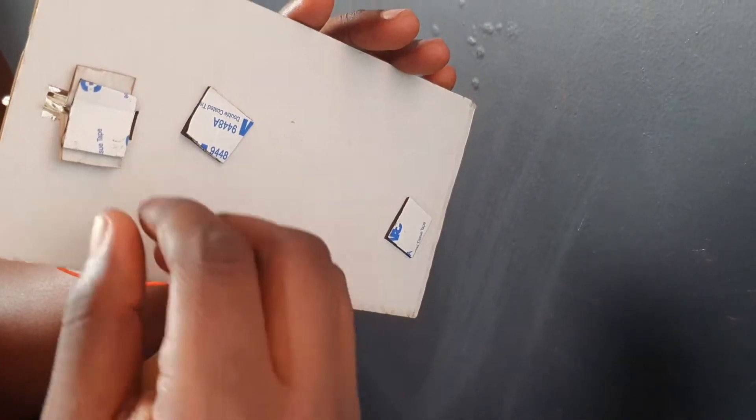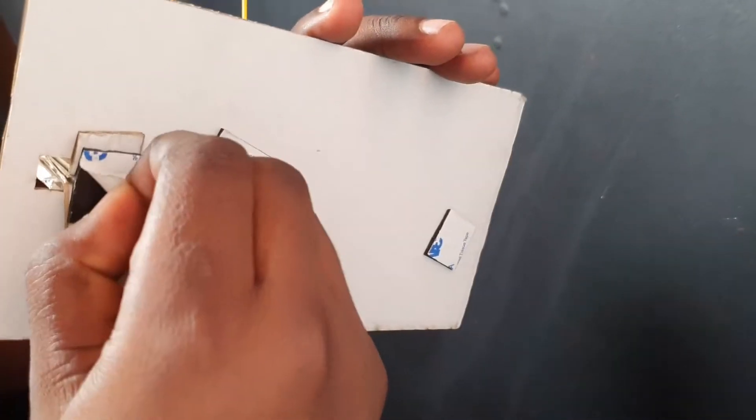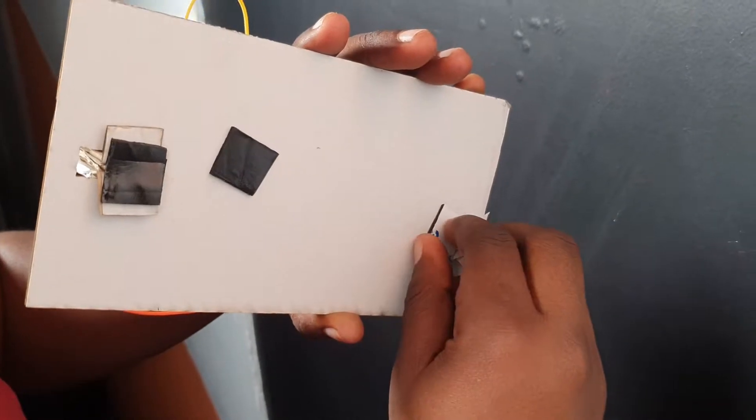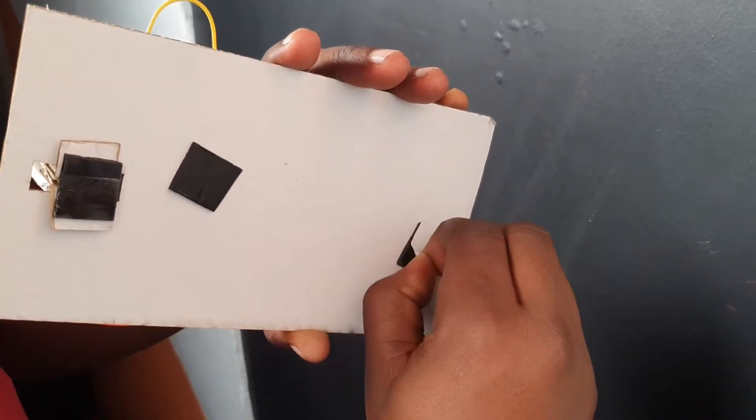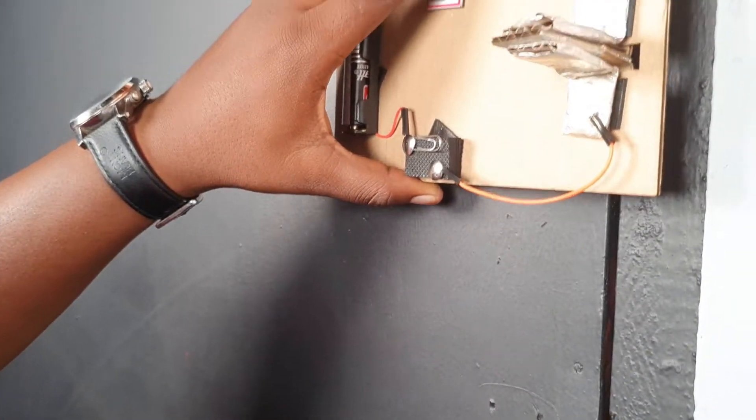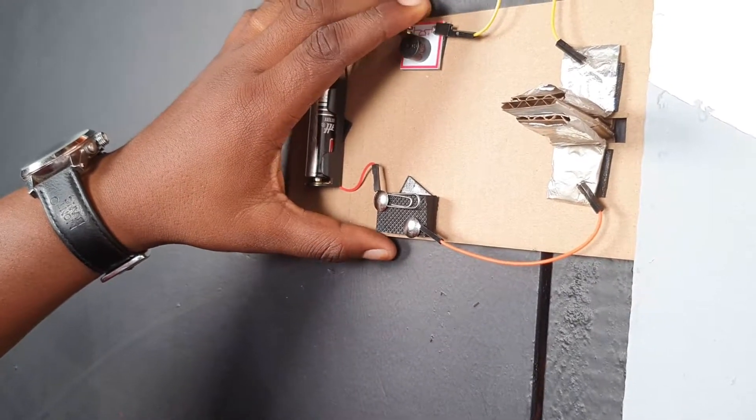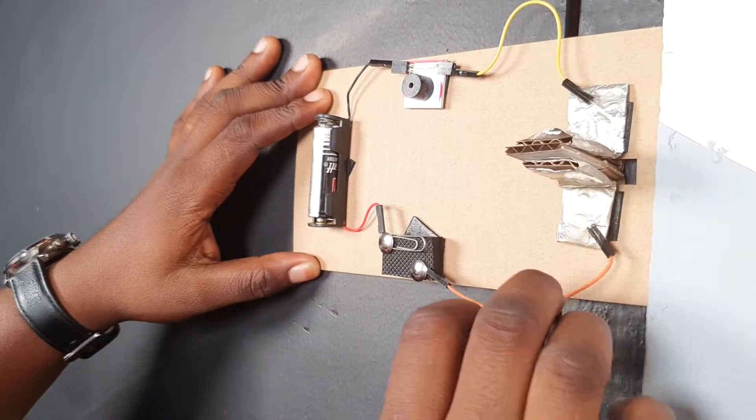So now let's go ahead and peel our double sided tapes while the non-conductor is still in position. Good. And now we attach this right to our door. Great.